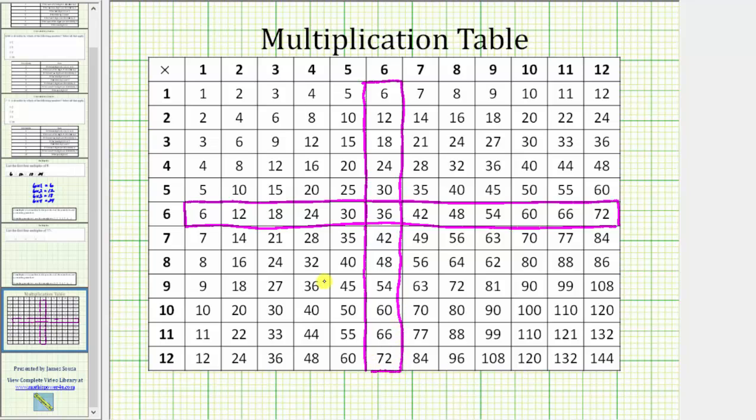In fact, the row and column give us the first 12 multiples of six. Here we have six, 12, 18, 24, and so on in this row. In this column, we have six, 12, 18, 24, and so on as well.